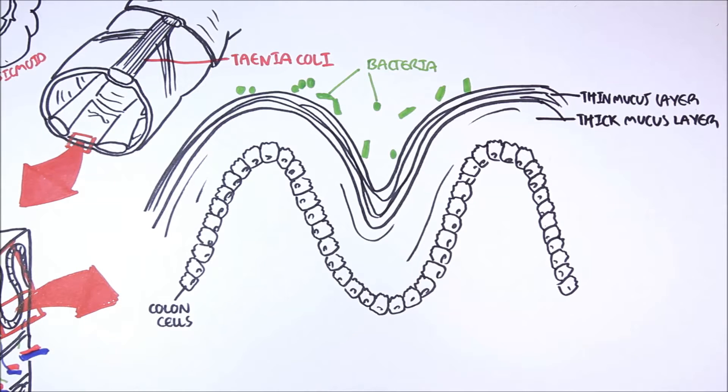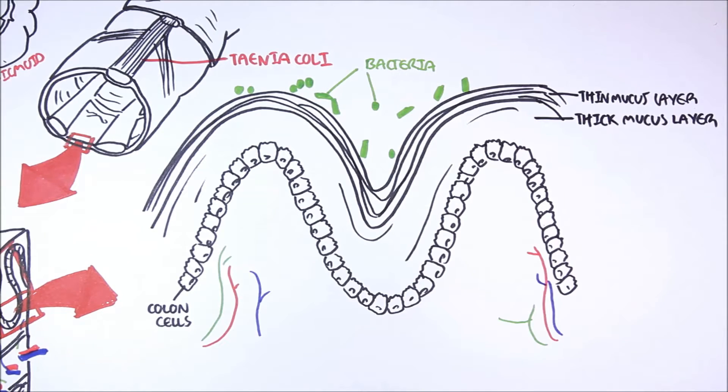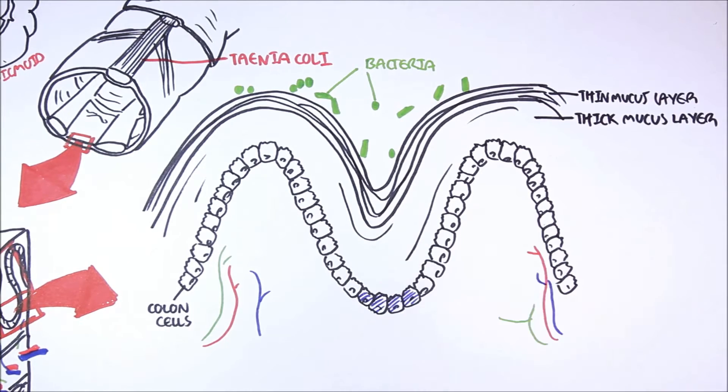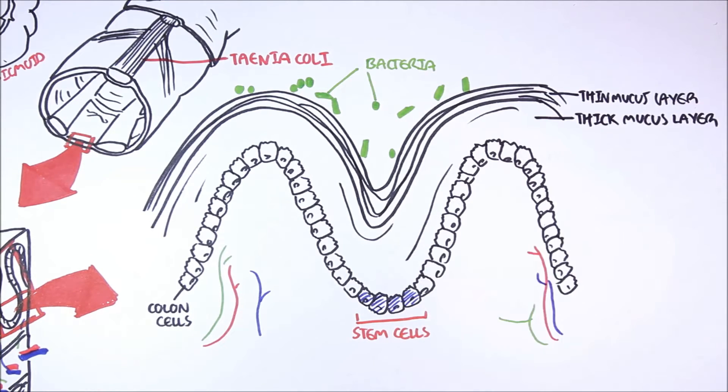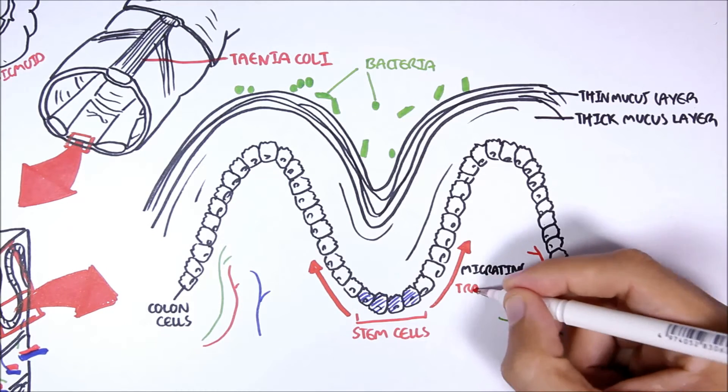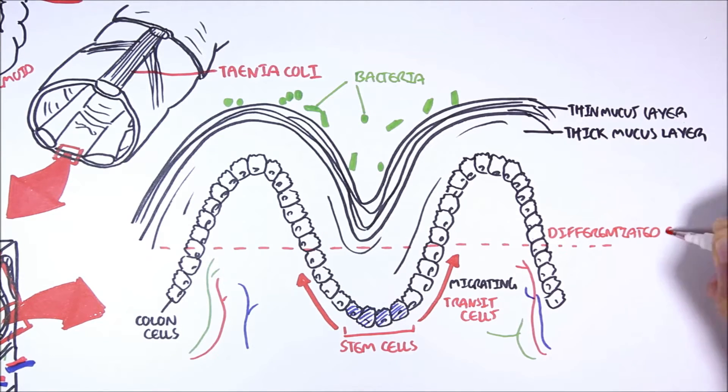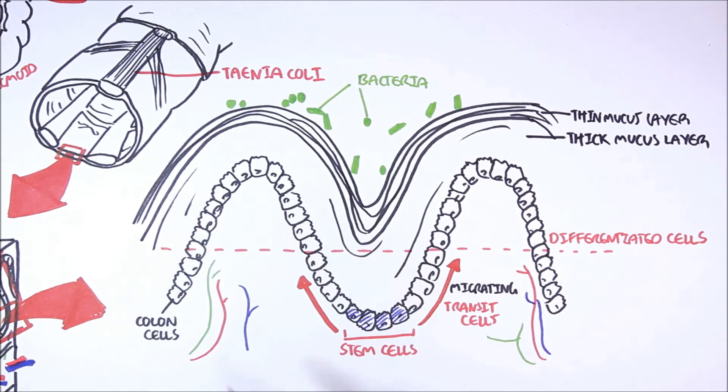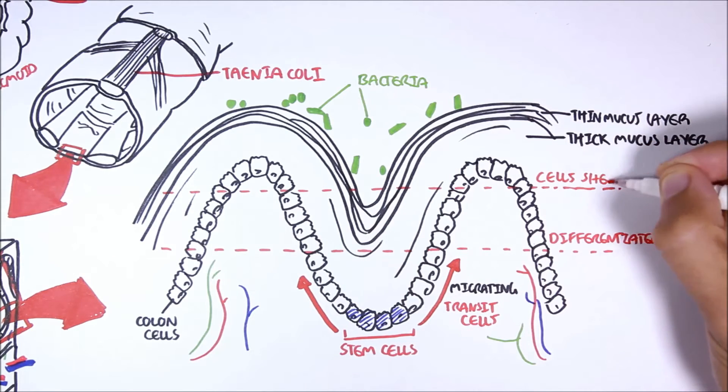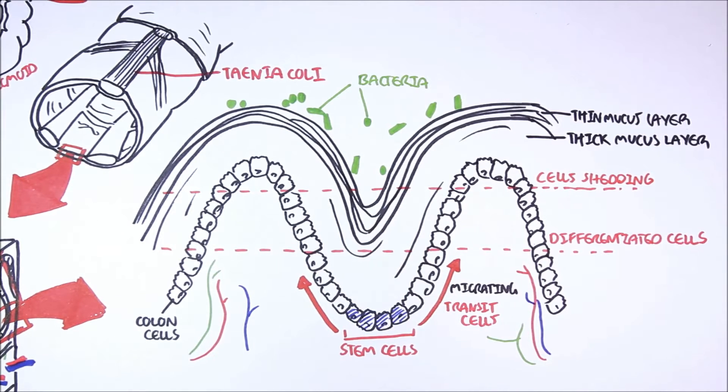The colon cells all arise from the cells within the crypts, because within the crypts we have stem cells that migrate up. These transit cells will move up where they will finally differentiate into different types of cells. After some time, once they progressively move up, they will begin to shed, allowing new cells to arise from the bottom again. You can think of it as a cycle where cells keep renewing.